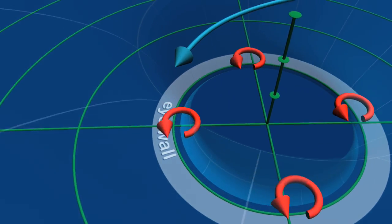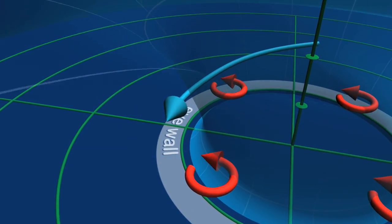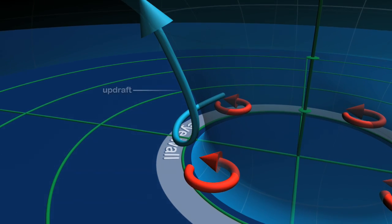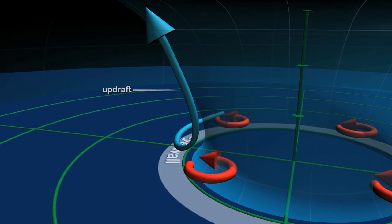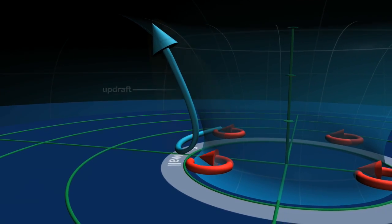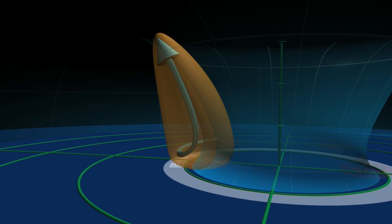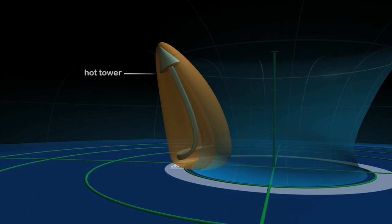Near the surface, air spiraling inward collides with these vortices, forcing the air upwards, creating an updraft. A very strong updraft in the eyewall carries moisture much higher than normal, creating a hot tower.